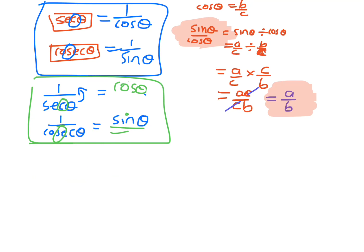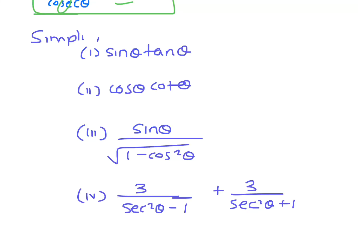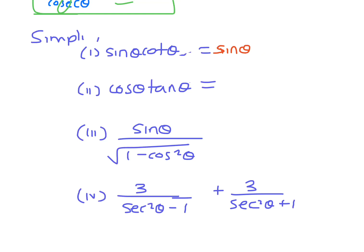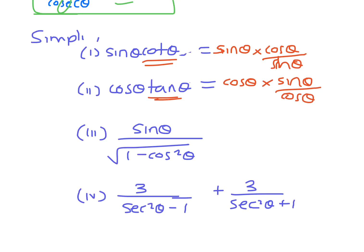Now we're going to use these to simplify a few expressions. First: sine θ times cot θ — change cot θ to cos θ on sine θ — so it's sine θ times cos θ on sine θ; the sine θ cancels, leaving cos θ. Second: cos θ times tan θ — tan θ is sine θ on cos θ — so it's cos θ times sine θ on cos θ; the cos θ cancels, leaving sine θ.